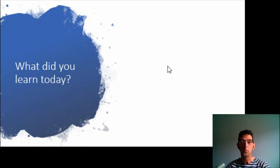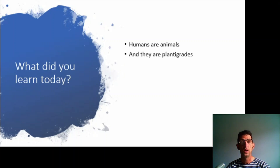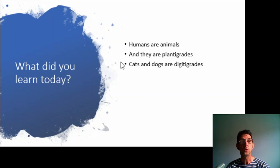So, what did you learn today? First of all, humans are animals, and they are plantigrades, because we walk on the sole of our foot. Cats and dogs are digitigrades, because they walk on their toes — on their digits.